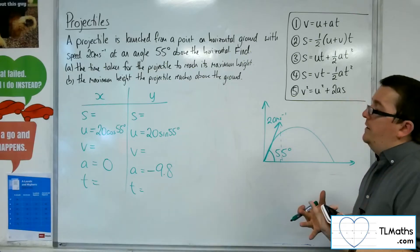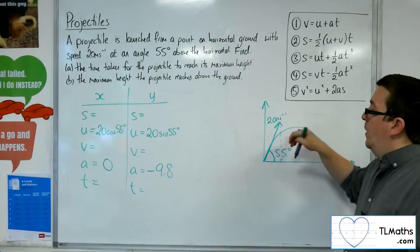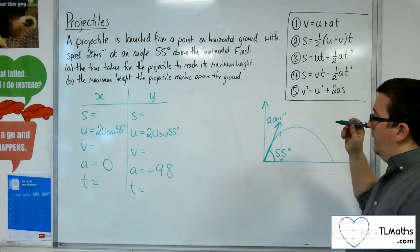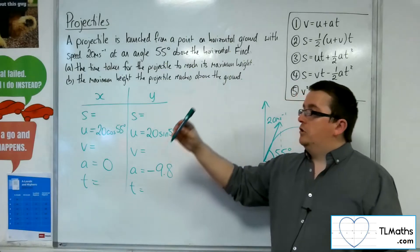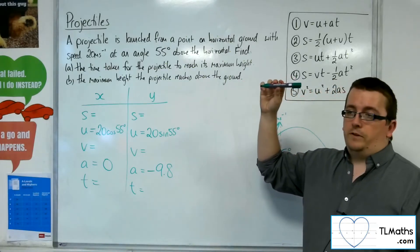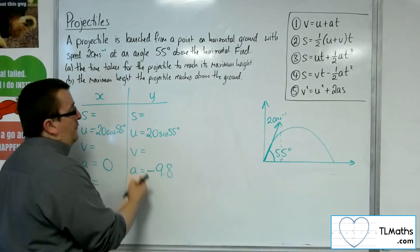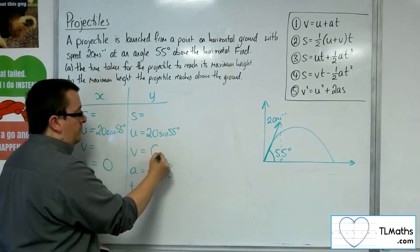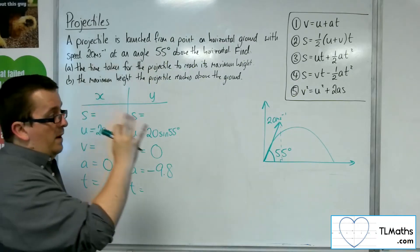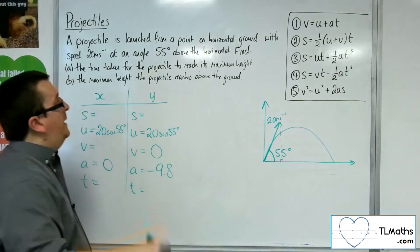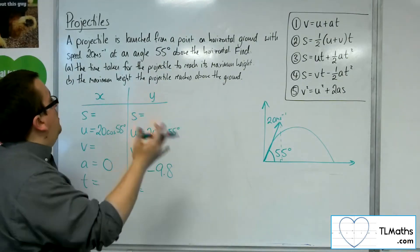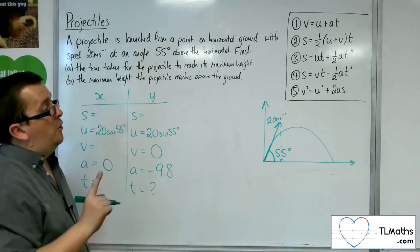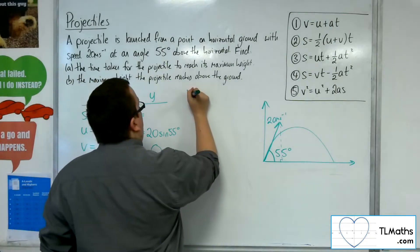In order to answer the time taken for the projectile to reach its maximum height, you need to understand that a particle reaches its maximum height when the vertical velocity is 0. It's still travelling from left to right, but its vertical velocity at that point will be 0. So we're actually looking at the vertical direction and we want that final velocity to be 0. I look at the SUVAT equations and think: what do I want to find? I want to find the time taken, so I want an equation that doesn't have s. The only one that doesn't have s is number 1.